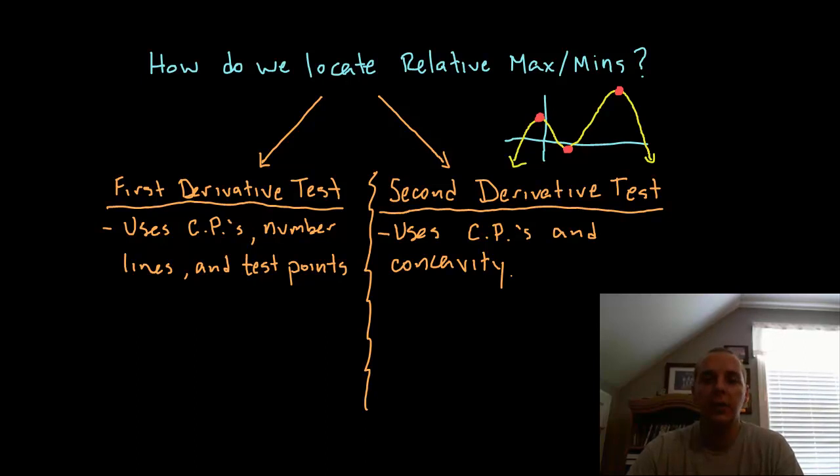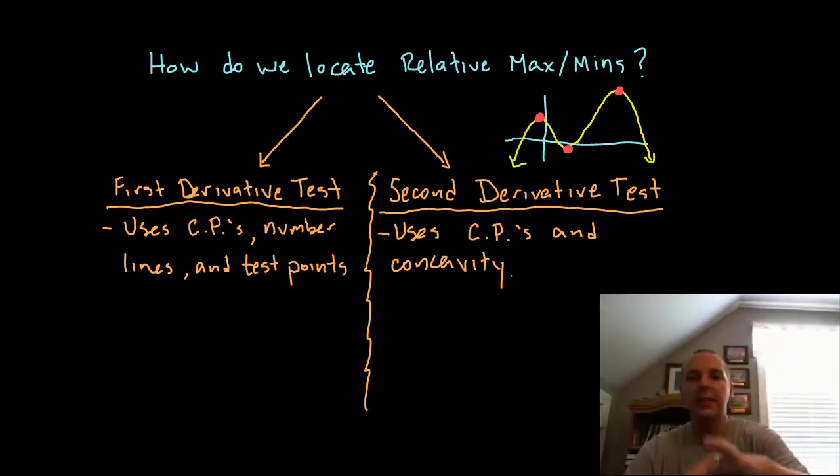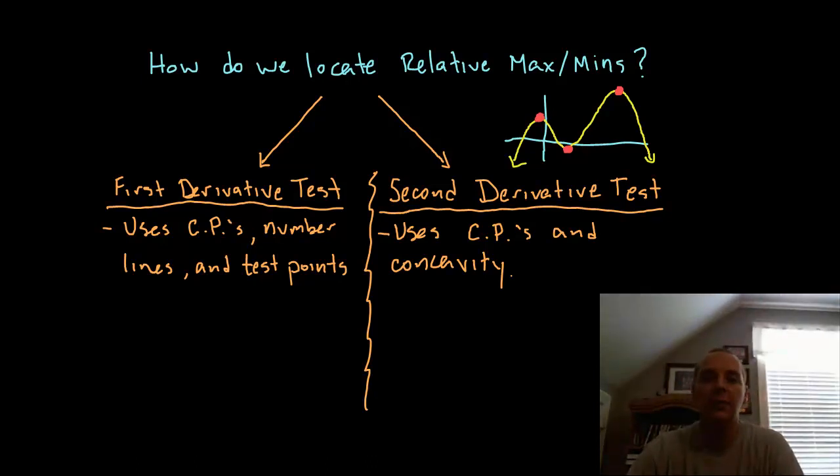For the first derivative test you're going to find your critical points and you're going to use a number line and use the fact that the function will be increasing and decreasing by using test points to get some idea of whether you've got maximums and minimums at these critical points. Is it going up and then going down indicating you have a maximum, or down and then back up indicating you have a minimum?